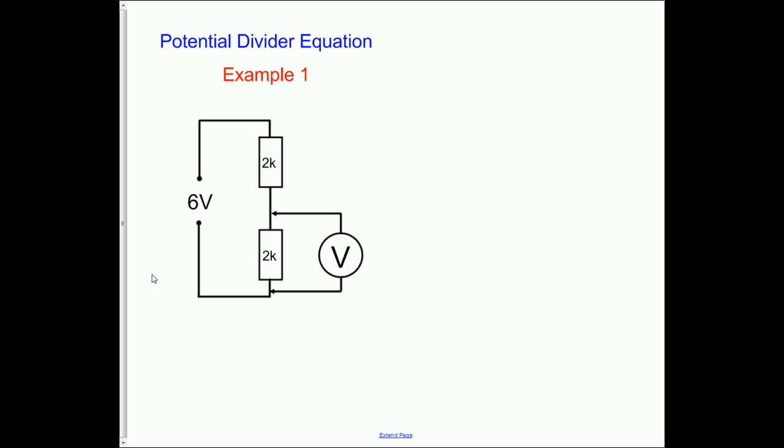In this video we're going to do some quick numerical examples of the potential divider equation. So the first question is what is this voltage just here? We've got six volts in and a pair of 2k resistors.